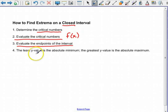After you've done that, you're just going to compare y values, and the least y value is the absolute minimum. The greatest y value is the absolute maximum. So that's it. Those are the four steps on how to find extrema on a closed interval.